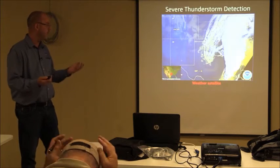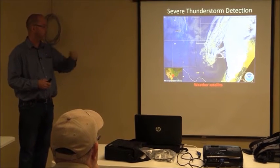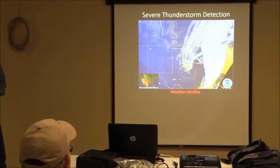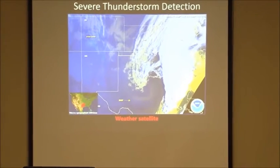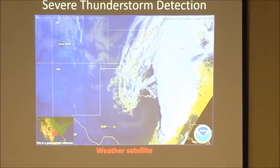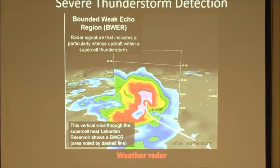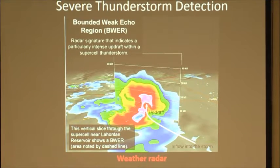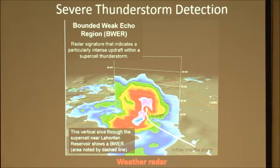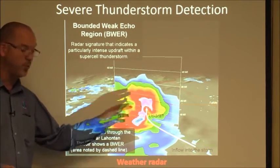The first one starts off with basically a review of what we talked about in Skywarn from a month ago: severe thunderstorm detection, weather satellites. The primary weather satellites across the United States go east and west. This is high-resolution visible satellite imagery of some severe storms moving through the plain states several years ago. This is the weather radar example — we're going to go into a lot more detail in the next presentation about radar. But just a 3D analysis of some of the aspects that we're looking at.